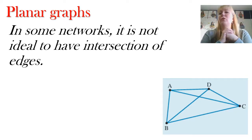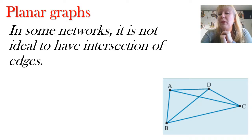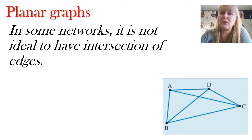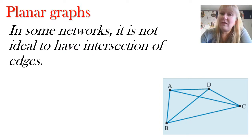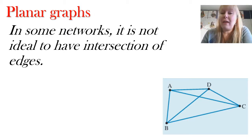In our focus today we're going to be talking about something called a planar graph. Sometimes we have networks where it's not ideal to have intersection of edges — you can see in the diagram we've got an intersection between AC and BD. In a real-life context like a railway network, an intersection creates a lot of cost, from a level crossing, having to build a bridge over the tracks, or even going underground with a subway system. That adds a lot of cost, and sometimes it's just better to go around.